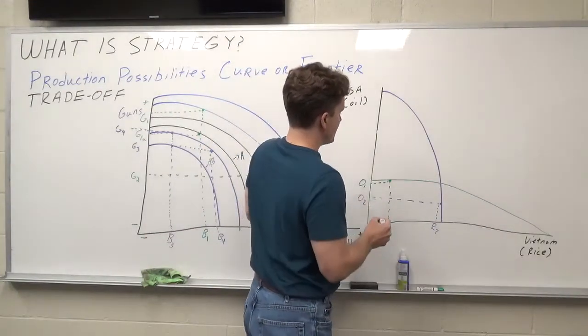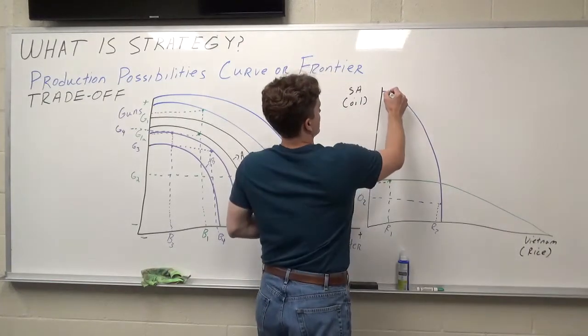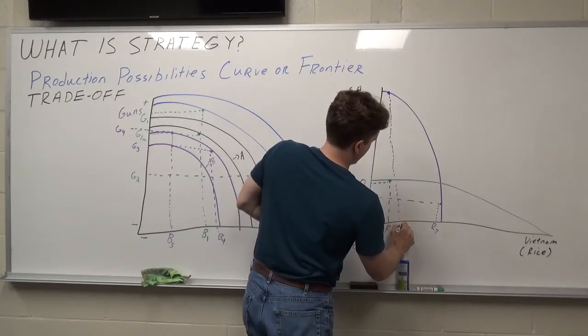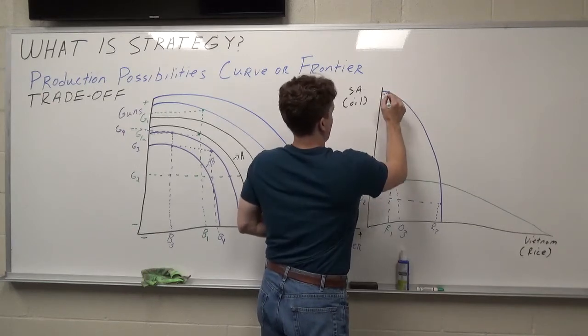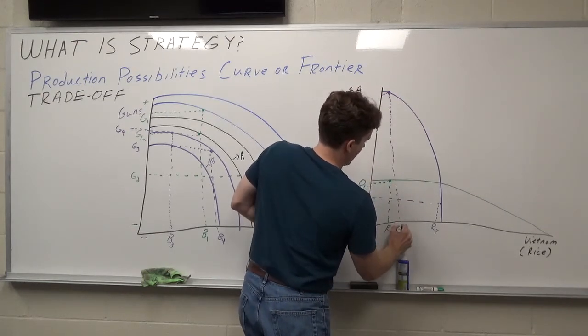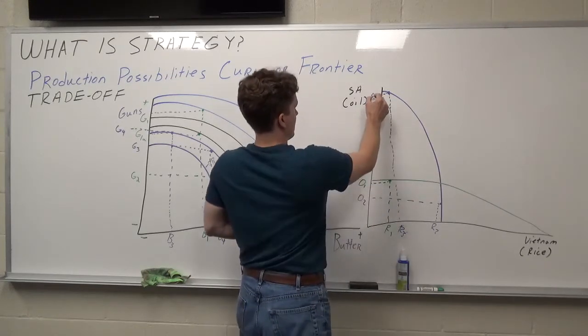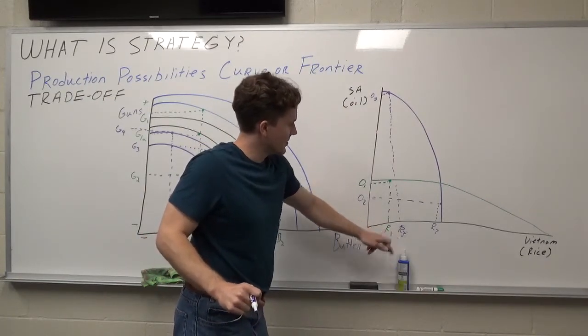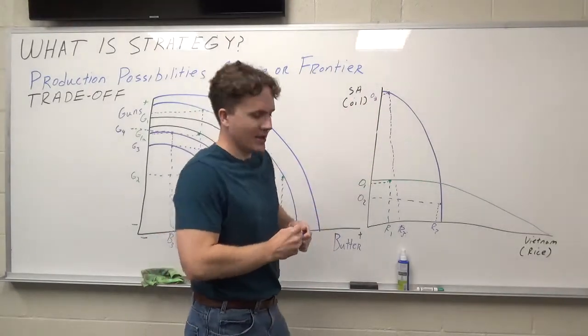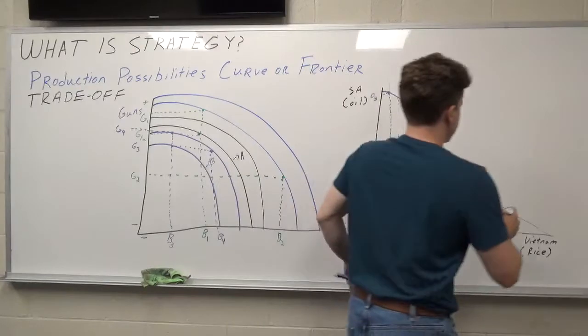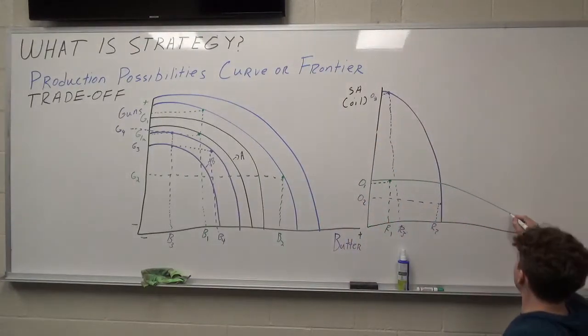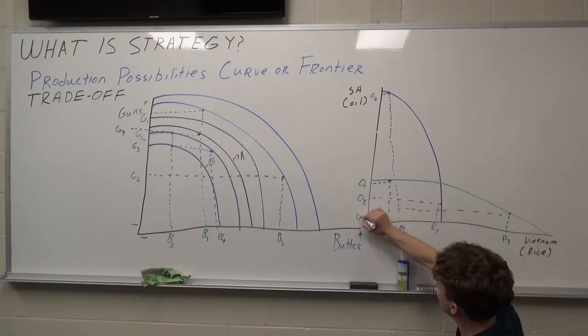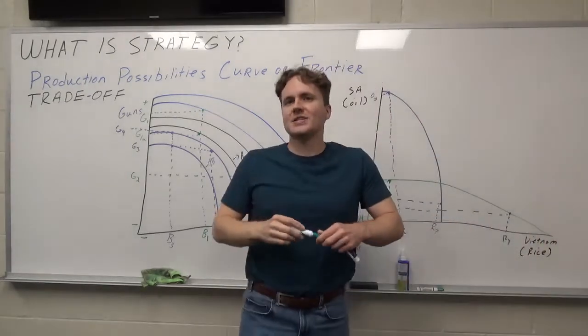Versus if the Vietnamese make a very different choice, or let's say the Saudis make a very different choice, and they produce oil way up here. That's going to be O-3, R-3. So look how much oil they have, and look how much rice they produce. Not much, but look at all that oil they can trade right there. And the same thing. Let's say Vietnam decides to make this ridiculous quantity of rice. They're not going to make much oil, but look how much they have to trade. So that's the whole point of strategy being different.